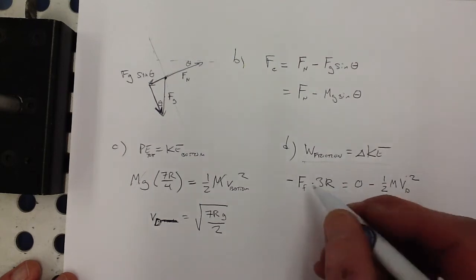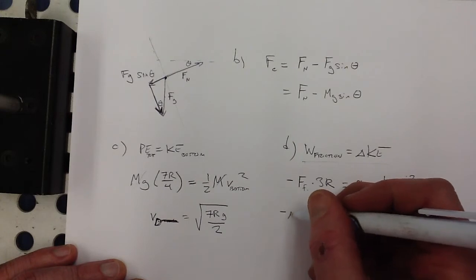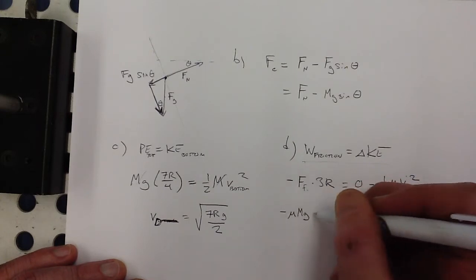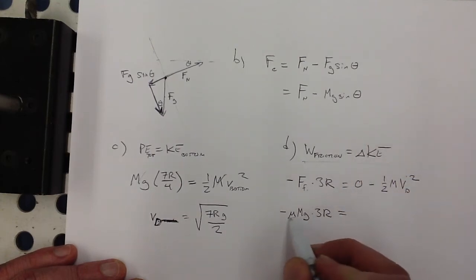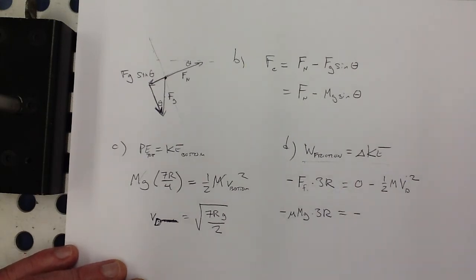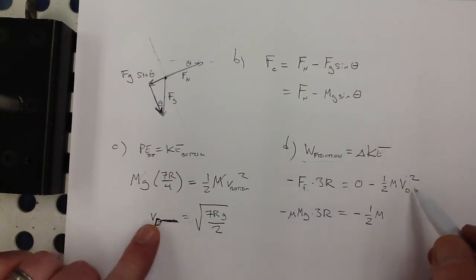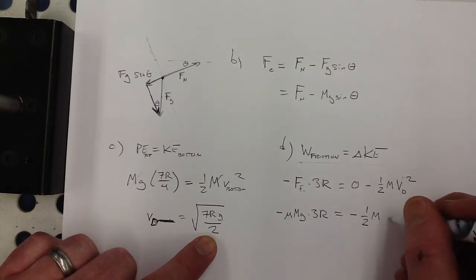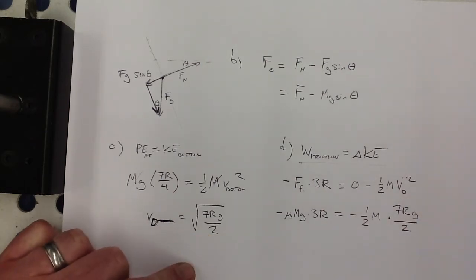So, let's substitute some stuff here. The frictional force would be mu times the normal force times 3R. That's what we're trying to solve for. Again, if I wrote something here that you didn't have, you should pause and try to finish it from here. And then that's equal to negative one-half M. And then that's the velocity at D is this. So, when you square that, that's going to be 7RG over 2.